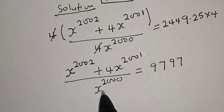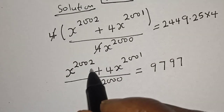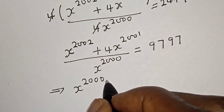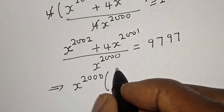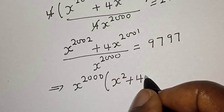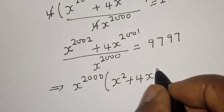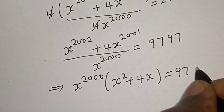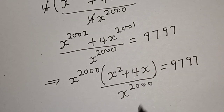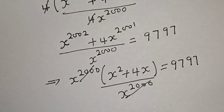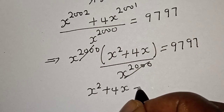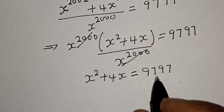We want to eliminate s raised to power 2000 from the numerator. We can factor s raised to power 2000 out. Inside the bracket, if you divide the first term by s raised to power 2000 we have s squared, and if you divide the second term we have 4s. This equals 9797 over s raised to power 2000. This cancels, and we are left with s squared plus 4s is equal to 9797.